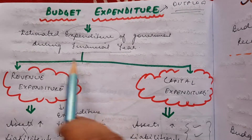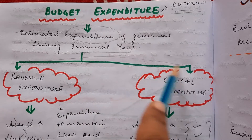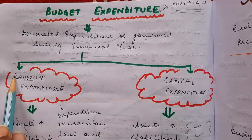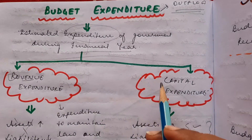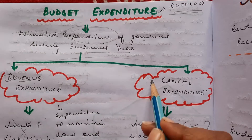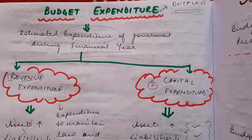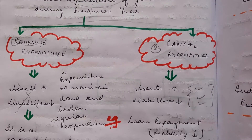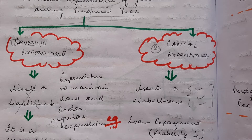This expenditure can be divided into two types: number one is revenue expenditure, and number two is capital expenditure. Let's first try to understand what revenue expenditure is.